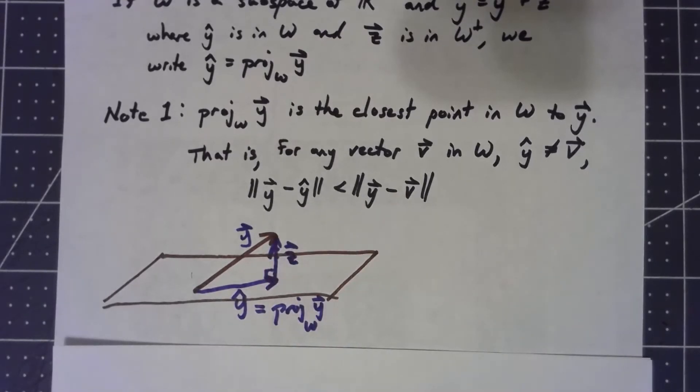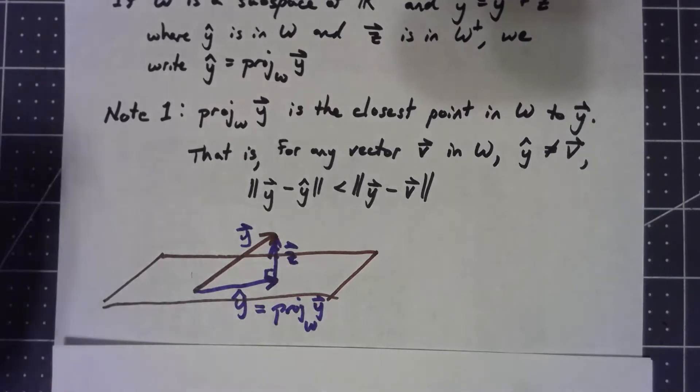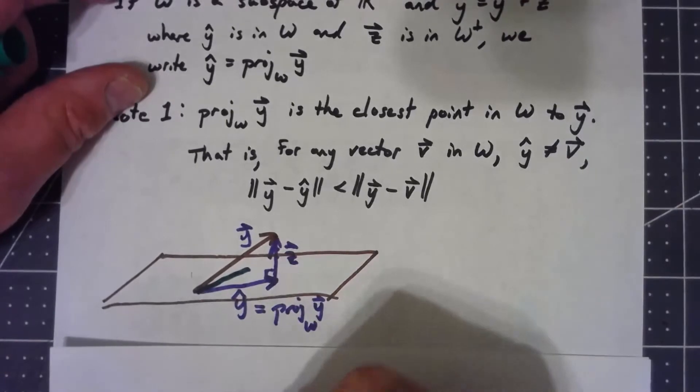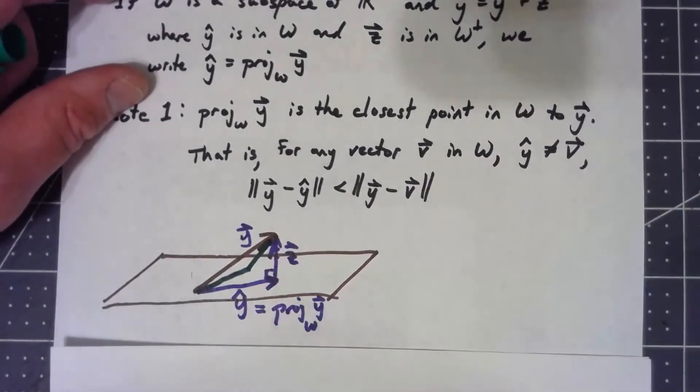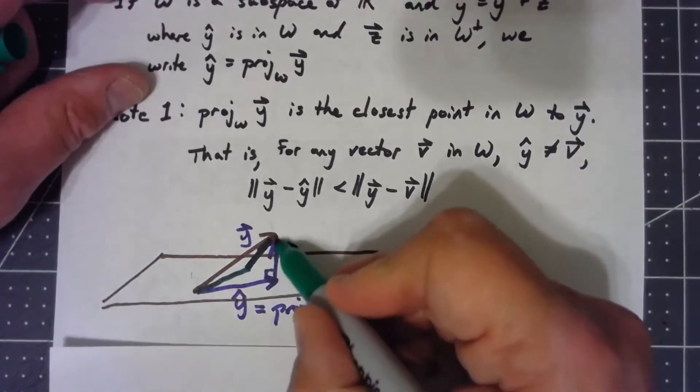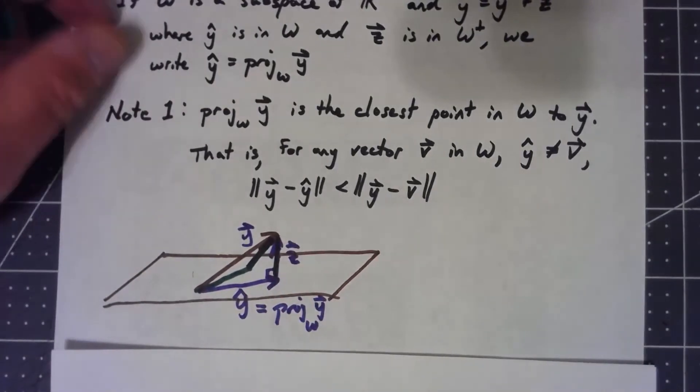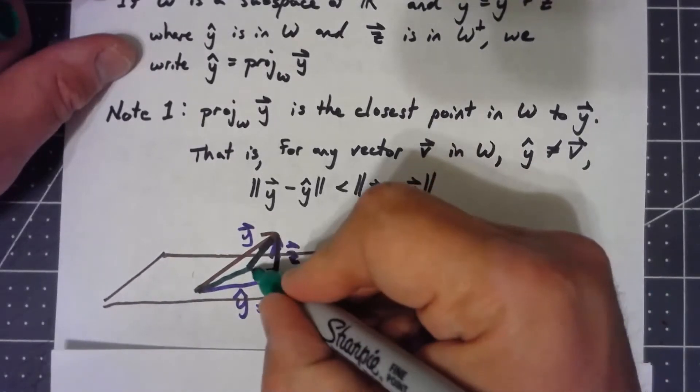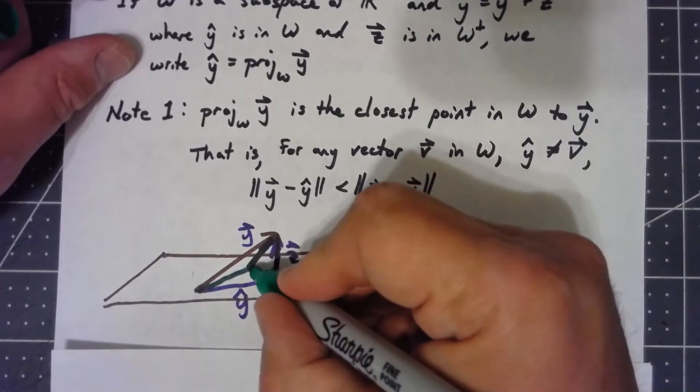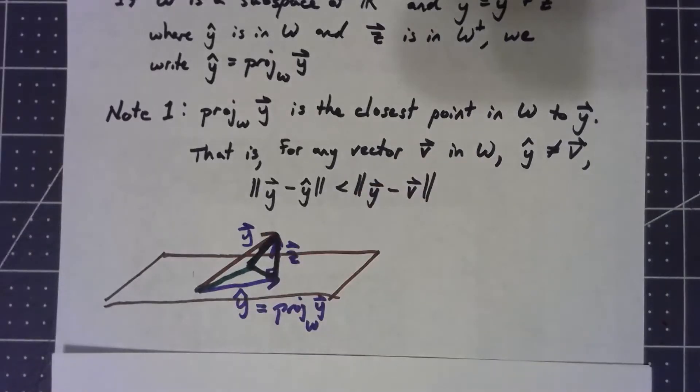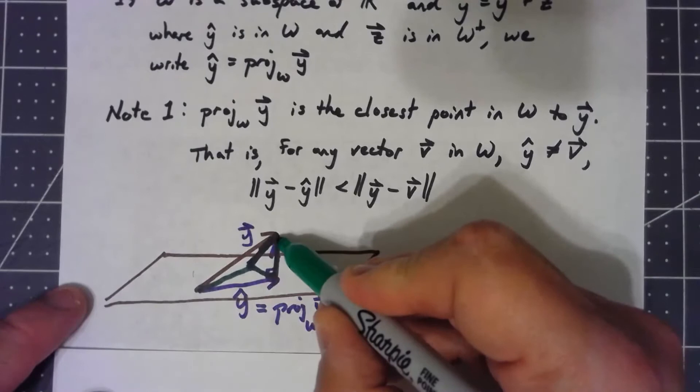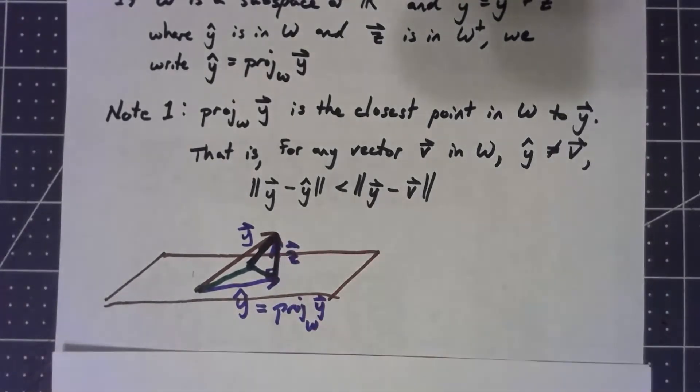So what is this norm thing? Remember when we're talking about distances in terms of vectors, the norm of the difference is the distance between those two vectors. So if I were to take any other vector in the plane and try and subtract it, this thing has to be longer. Why? Because we've got another right triangle right here. The hypotenuse has to be longer than the leg.